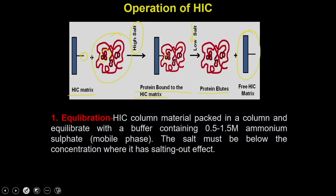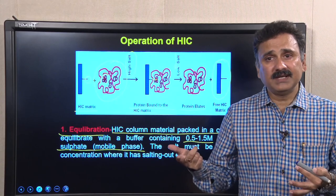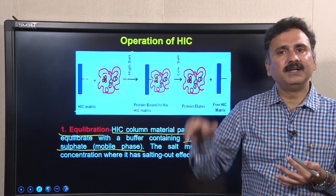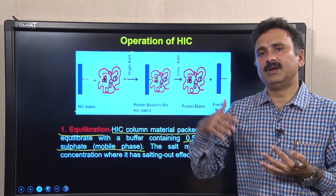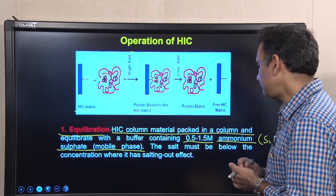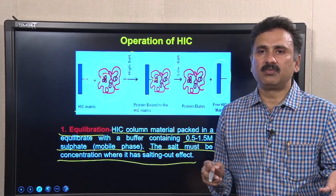There are multiple steps to perform HIC. First is equilibration: take the HIC column and equilibrate with a buffer containing 0.5 to 1.5 molar ammonium sulphate. Ammonium sulphate is used as a salt to achieve the salting-in effect and provide a suitable environment so the protein exposes its hydrophobic patches and binds to the matrix. This salt concentration of 0.5 to 1.5 molar should not cause the salting-out effect, otherwise the ammonium sulphate will precipitate the protein out of solution.